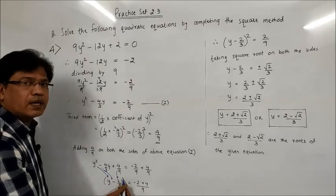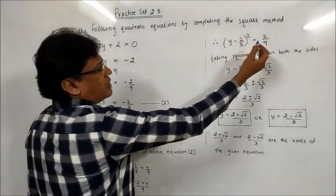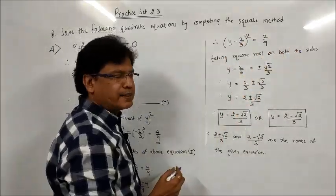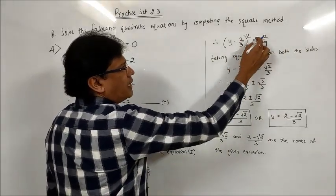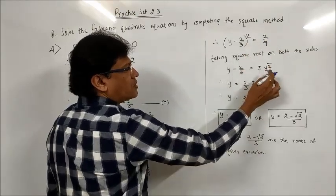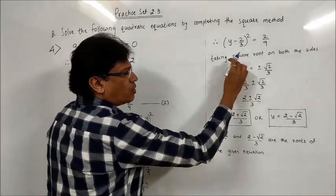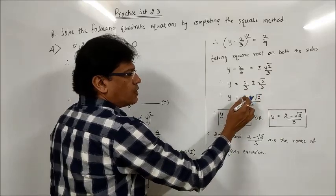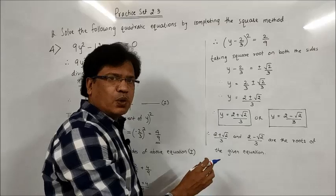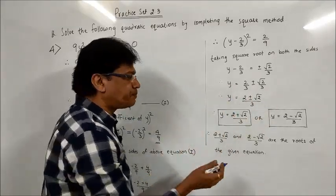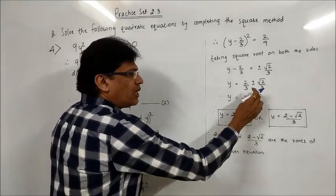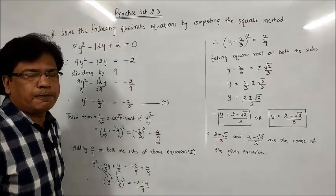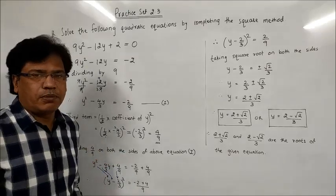To remove the square, I take square root on both sides. Simplifying the right-hand side first: 2/9 remains. Taking square root on both sides, the square is removed and the right-hand side becomes ±√2/3. Then -2/3 goes to the right-hand side becoming +2/3, and since the denominator 3 is the same, I take it common: y = (2 ± √2)/3. Splitting into two roots: (2 + √2)/3 and (2 - √2)/3 are the roots of the given equation.